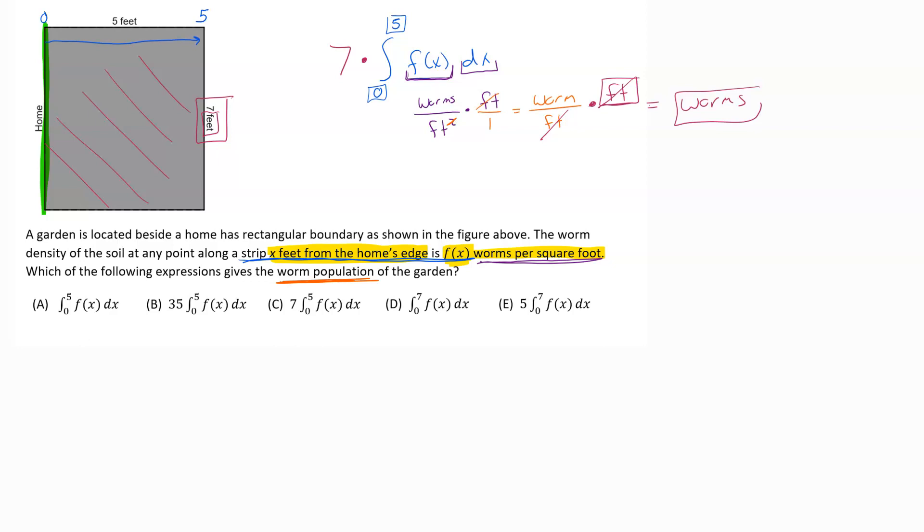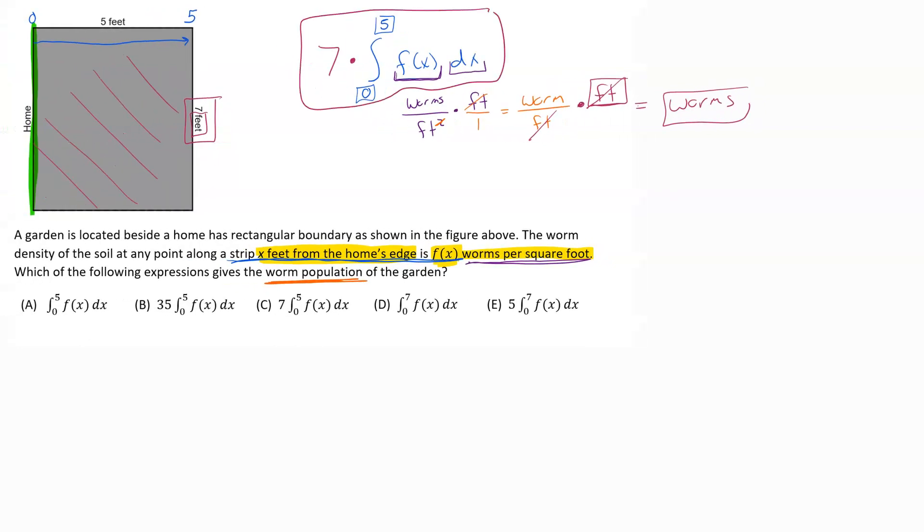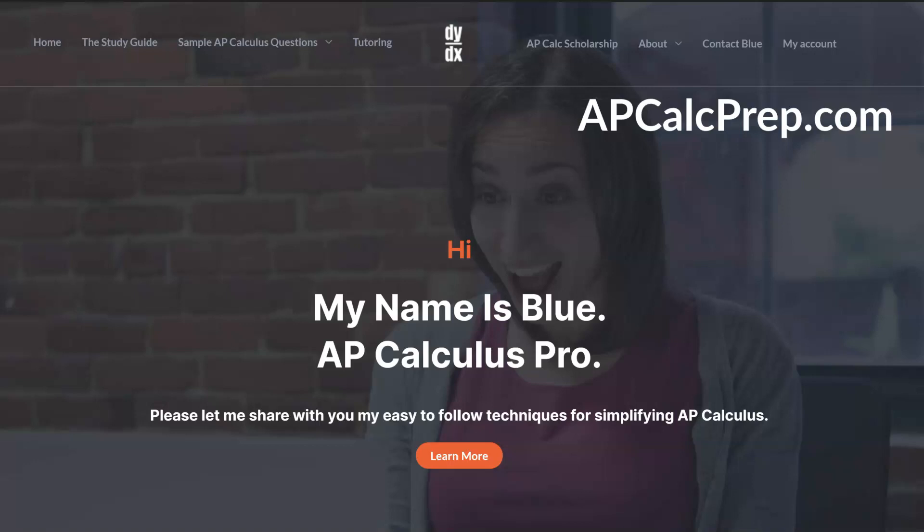Once you do that on this problem, we can see that our final answer would have been seven times the integral from zero to five of f of x dx, which would have been option C. Thanks for watching my video.